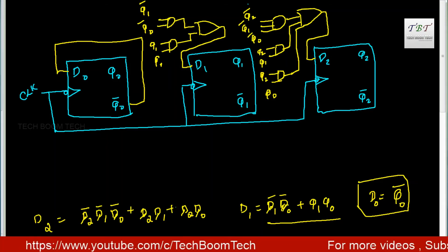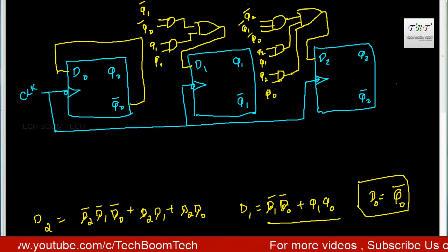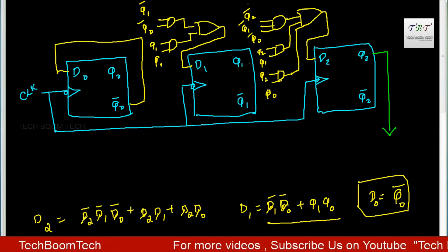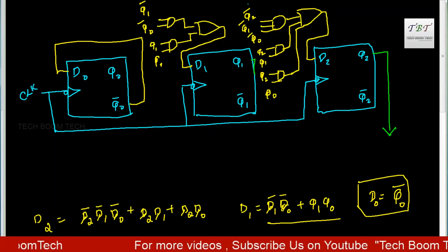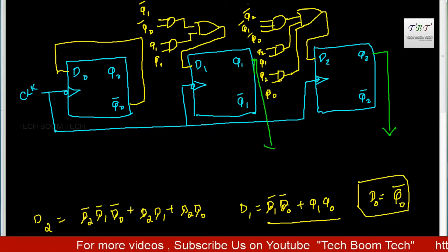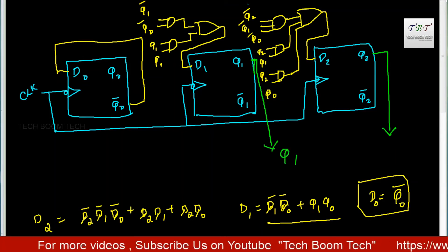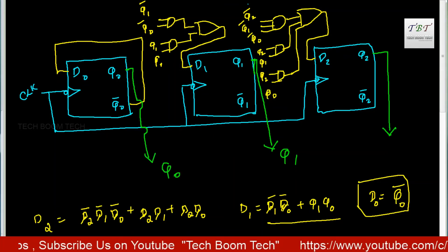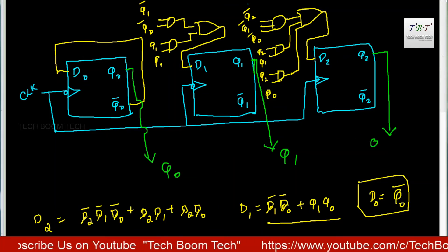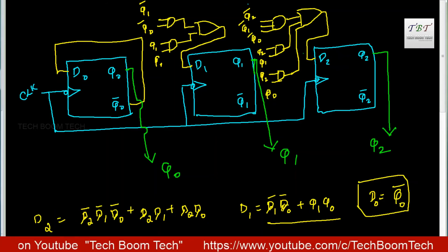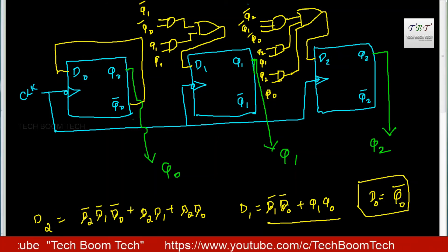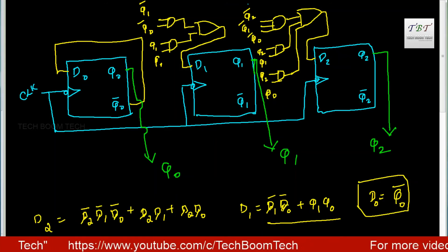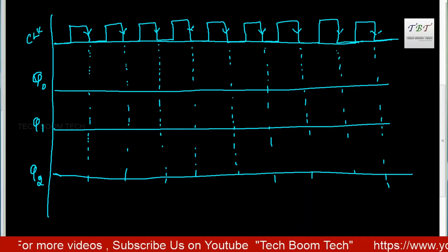We mark the outputs of the diagram. The outputs are Q2, Q1, and Q0. This is the count output.